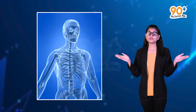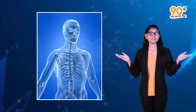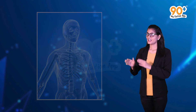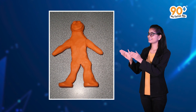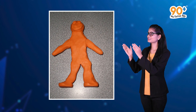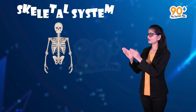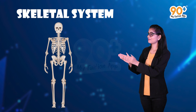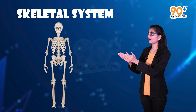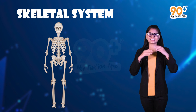But why do we need this framework? It's because our body without a skeleton appears like a jelly that has no shape of its own. And the skeletal system we are going to talk about in detail consists of a framework of bones and a few cartilages.